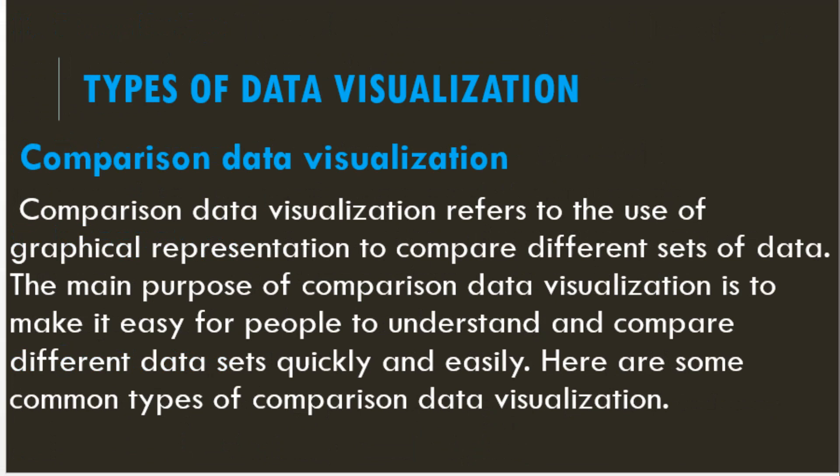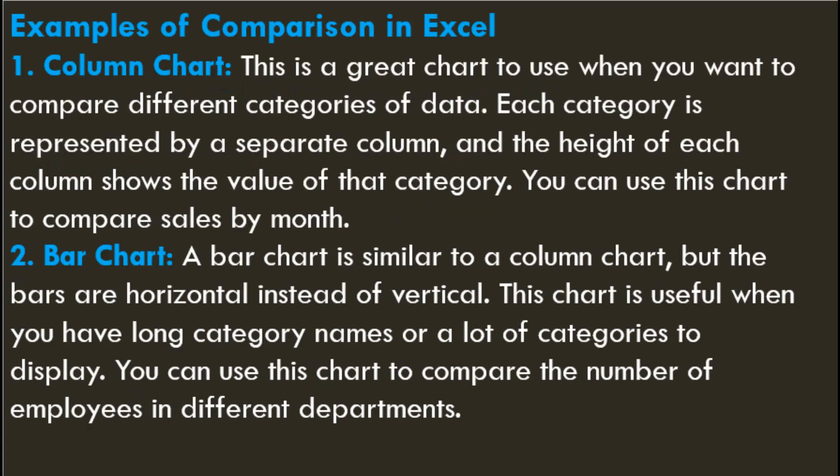Types of Data Visualization — A. Comparison Data Visualization: Comparison data visualization refers to the use of graphical representation to compare different sets of data. The main purpose is to make it easy for people to understand and compare different data sets quickly and easily. 1. Column Chart — this is a great chart to use when you want to compare different categories of data. Each category is represented by a separate column, and the height of each column shows the value of that category. You can use this chart to compare sales by month.